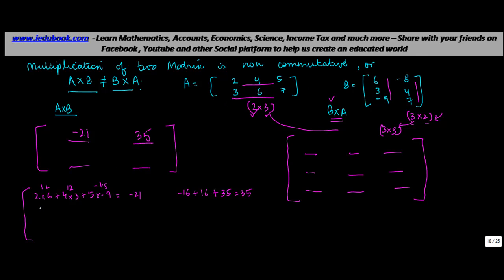For second row, first column: 3×6 = 18, plus 6×3 = 18, plus 7×(-9) = -63, giving 18 + 18 - 63 = -27. For second row, second column: [3, 6, 7] into [-8, 4, 7] gives -24 + 24 + 49 = 49.